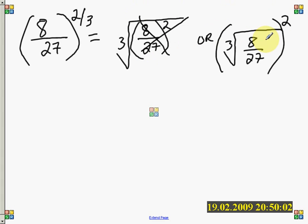I think I can avoid making those numbers bigger. I'm going to go over here and I happen to know that 8 is a perfect cube and so is 27. So I'm going to go with this method.